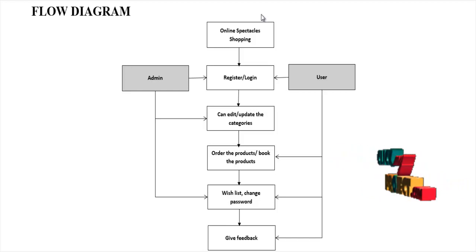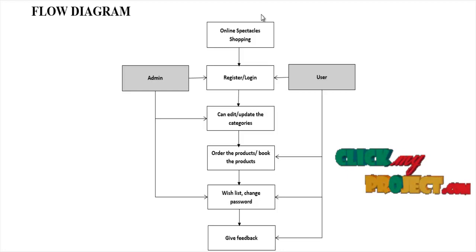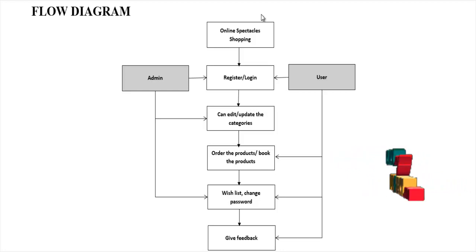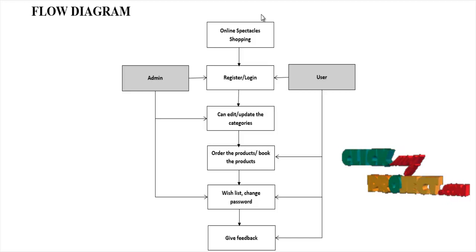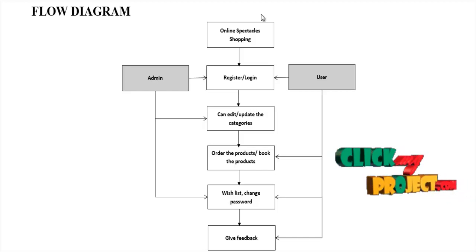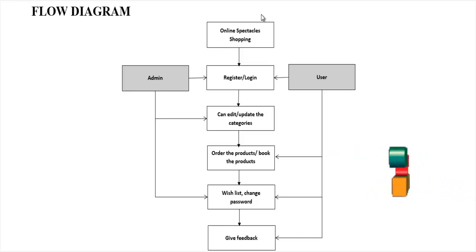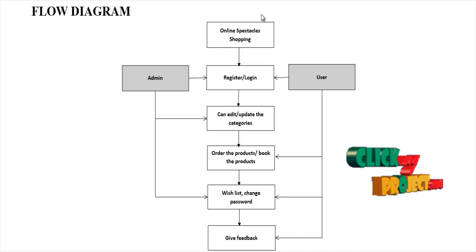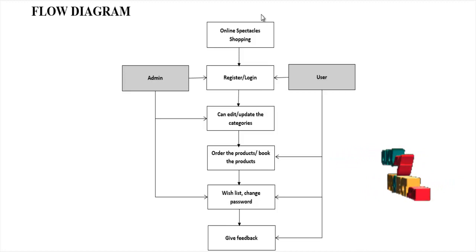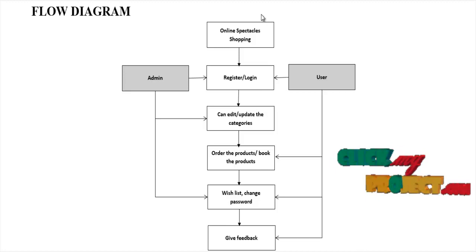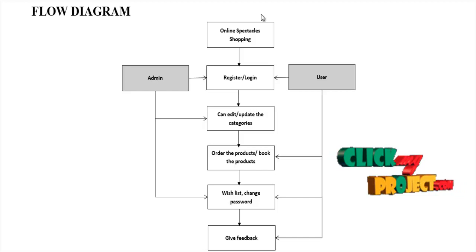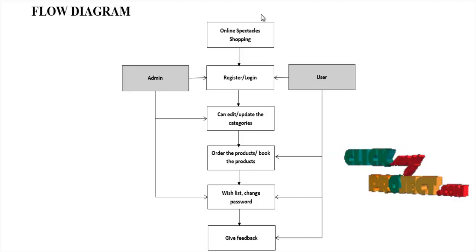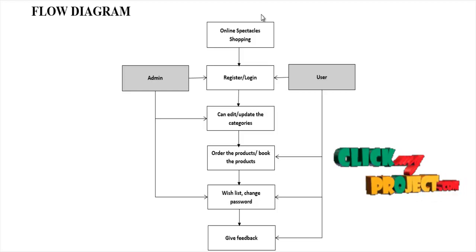For online spectacle shopping, first the admin can log in to access the corresponding functionality. The admin can only edit or update the categories — that is, the admin can only add or remove products. The admin can also change the password and view the inbox for user feedback. They also have a wishlist.